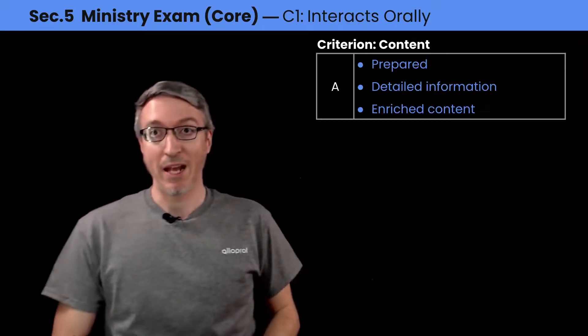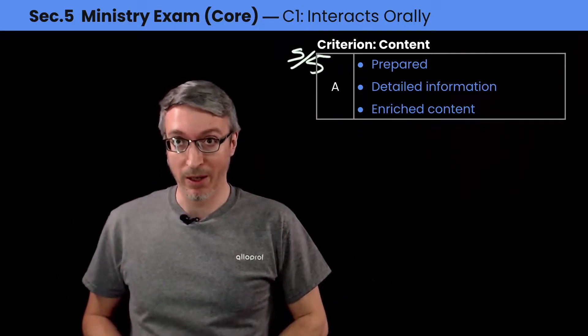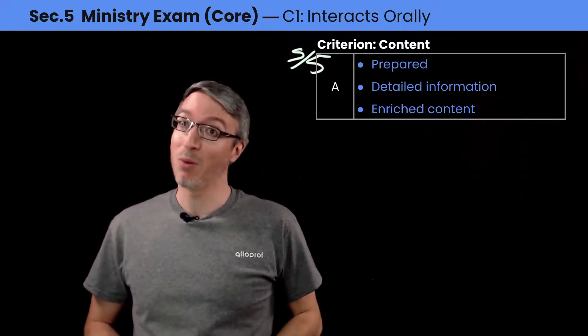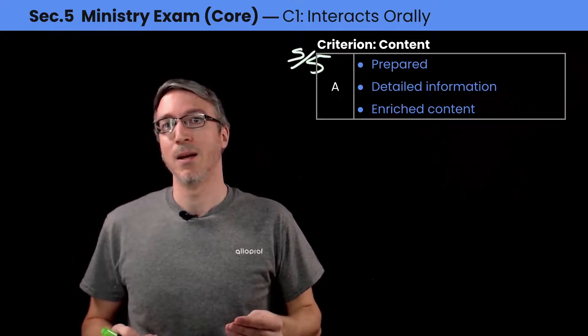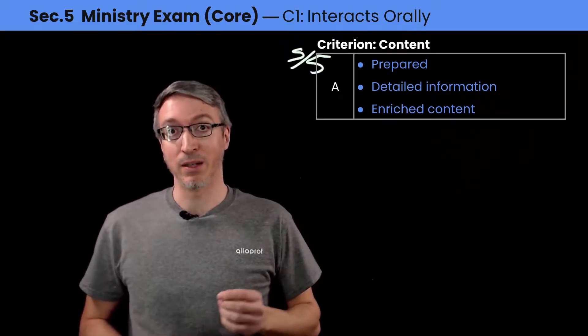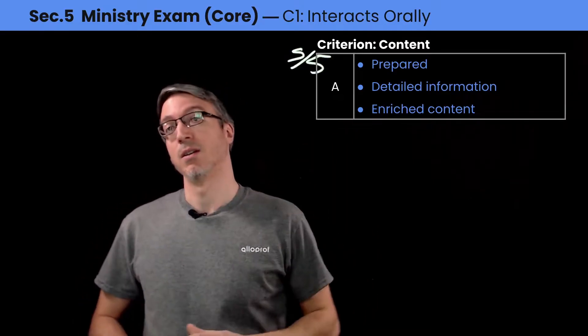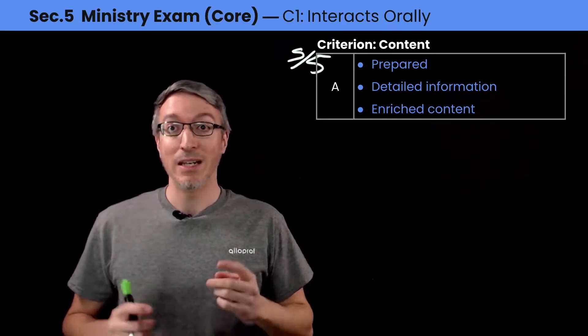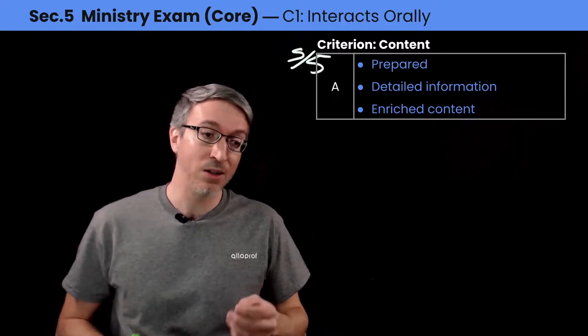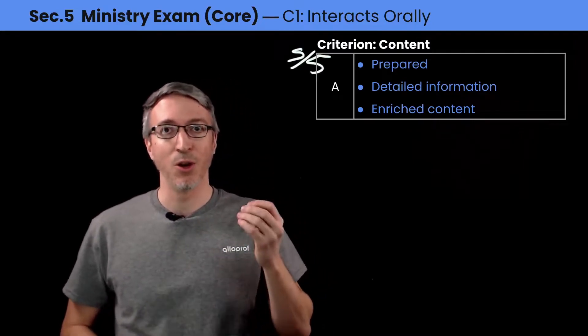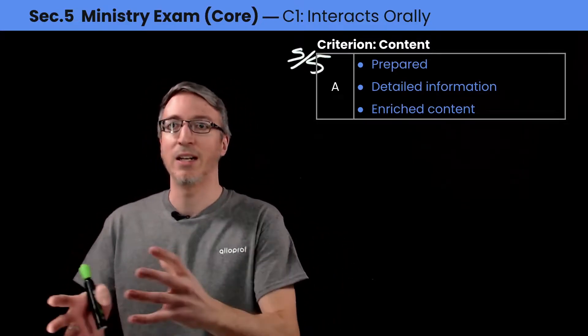Let's talk about the criterion content. To be at the top of the grid — five on five — you need to be prepared. Being prepared means you read the preparation booklet and found detailed information inside it, and that you know the topic. But it's not only knowing the topic; you need enriched content. Enriched content means you did your research, looked beyond the subject, and learned new things that you're bringing into the discussion.